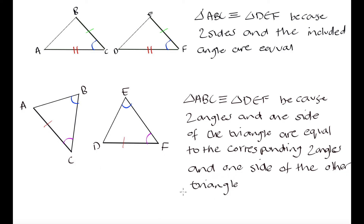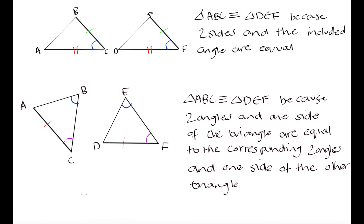So those are four different rules we have gone over that will allow you to determine whether two triangles are congruent, just based on the length of some of their sides and a few pieces of information — but not all of the information. You don't need to calculate every single angle and side length in two triangles to tell whether they're congruent, because these four rules help you determine congruency when you only have some information about those triangles.